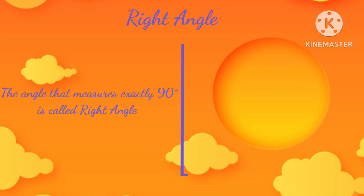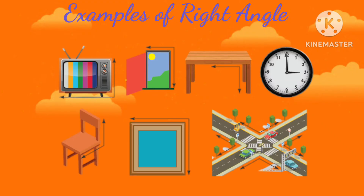An angle that measures exactly 90 degrees is called a right angle. Here are a few examples of right angles.